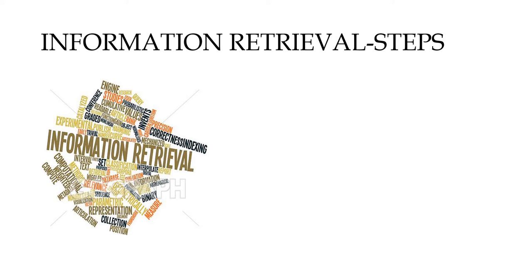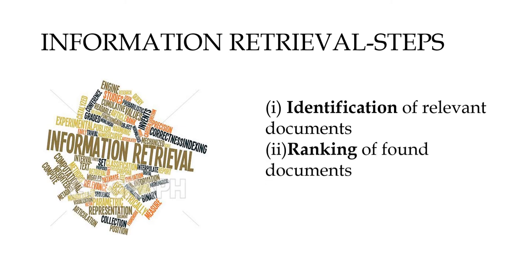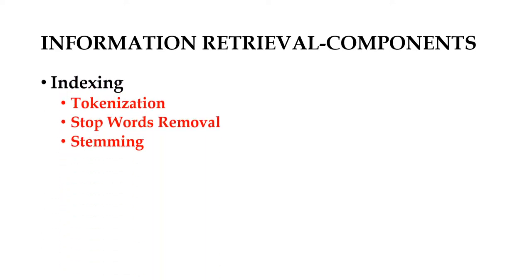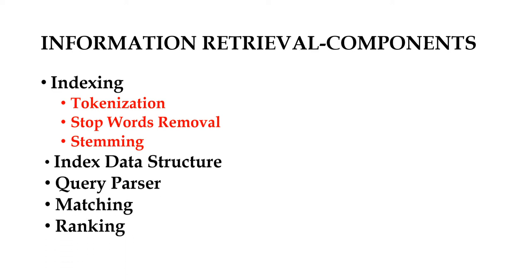There are a few steps for information retrieval: identification of relevant documents and ranking of the found documents. We need an architecture to retrieve data, and the components required for building that architecture are indexing — which consists of tokenization, stop words removal, stemming, and index data structure — as well as query parser, matching, and ranking. We will see each component in detail now.